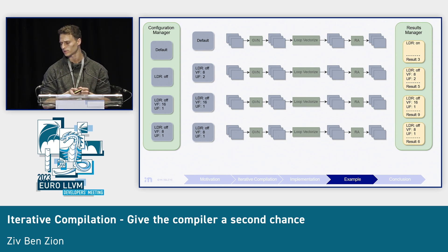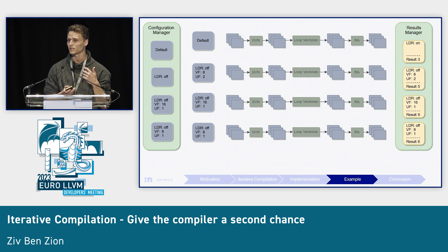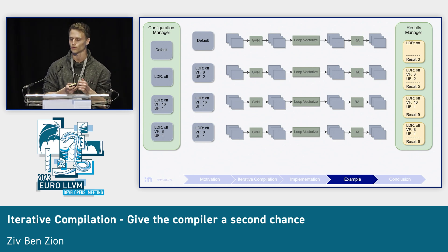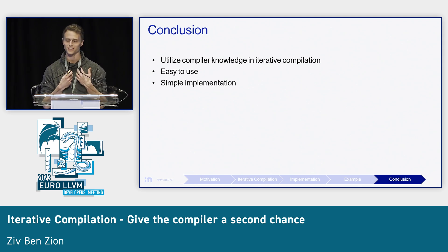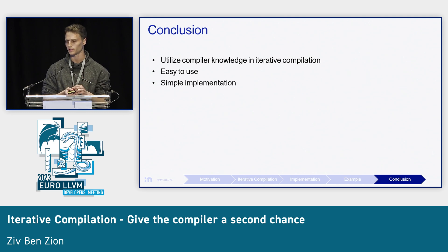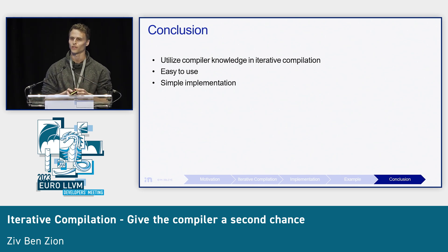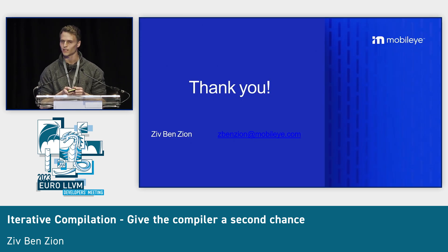Now the iterative compilation process is finished. We are left with four configurations and their results. The nice thing here is that we tested only four configurations, but these are the four configurations the compiler itself identified as the most interesting ones to try for the given model. To summarize: we can — and in our case we do — utilize compiler knowledge in iterative compilation, allowing it to navigate the search space of all configurations on its own. It is easy to use: you can register a decision, get a decision from the current configuration, and set a result. And as you've probably figured out, it is not too complex to implement — it was pretty straightforward. So why not do so? Thank you.